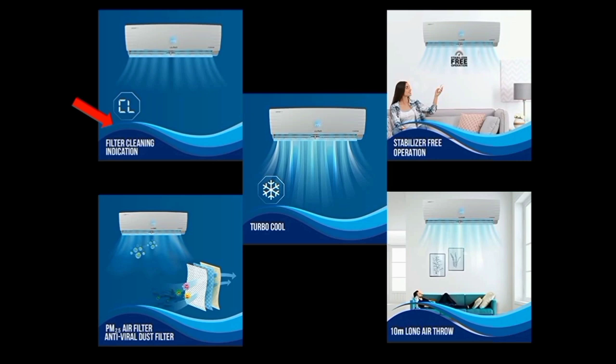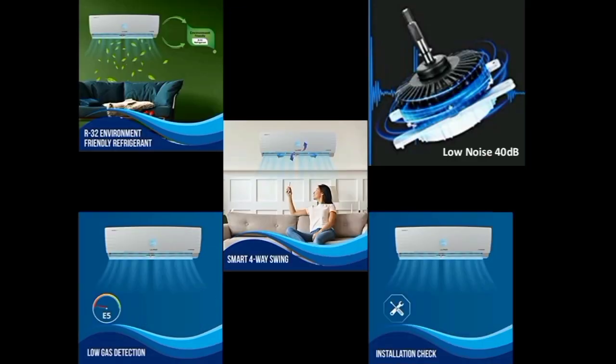The AC also has a turbo mode — if you want to cool the room faster, you can turn on turbo for faster cooling. This AC also features stabilizer-free operation, meaning it can handle power fluctuations on its own without an external stabilizer, preventing product damage. It can also operate at a distance of up to 10 meters.